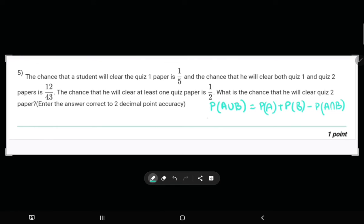Let us just simplify the question. Event A is clearing quiz number 1. Event B refers to clearing quiz number 2.